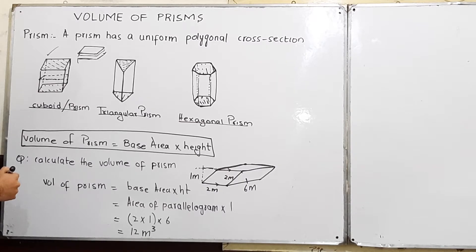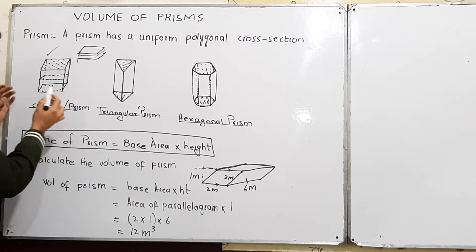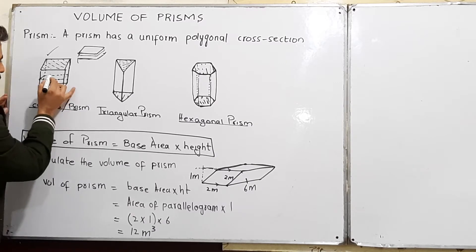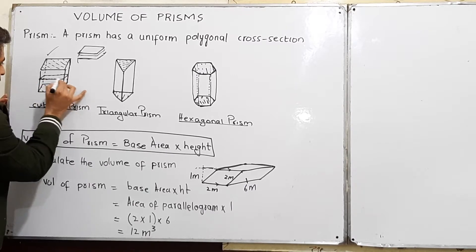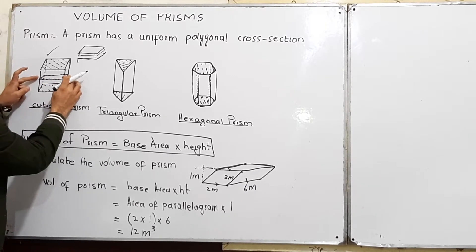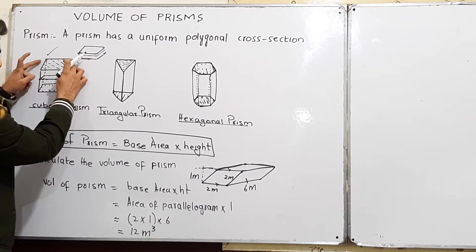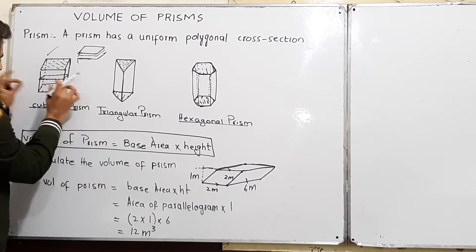Now this shape I may call a cuboid. When you take a cross section from anywhere within the shape, this cross section will be the same as the top surface or the base.